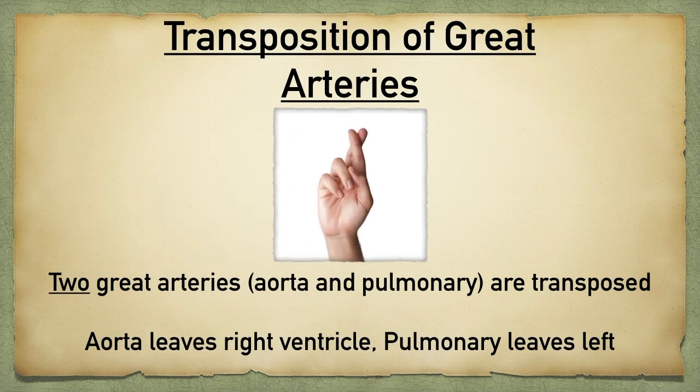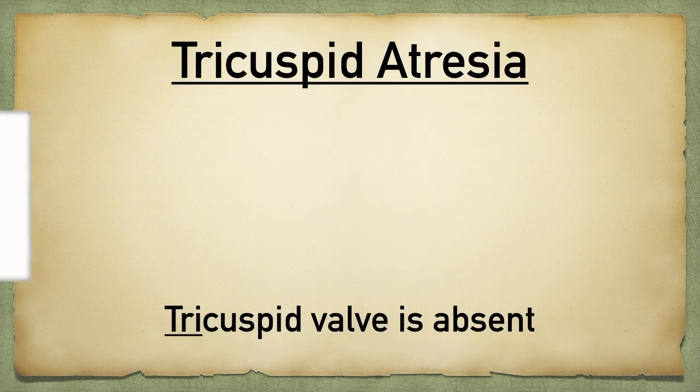Number two — hold up two fingers and cross them — transposition of the great arteries. This is when the pulmonary artery comes out of the left ventricle rather than the right, and the aorta comes out of the right ventricle rather than the left.